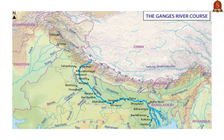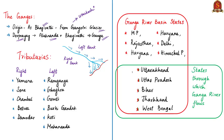River Ganga passes through the states of Uttarakhand, Uttar Pradesh, Bihar, Jharkhand, and West Bengal. The river basin extends to Uttar Pradesh, Bihar, West Bengal, Madhya Pradesh, Rajasthan, Jharkhand, Haryana, Uttarakhand, Chhattisgarh, Himachal Pradesh, and the Union Territory of Delhi. With this we come to the end of this topic, and the displayed prelims question will be discussed in the last session.